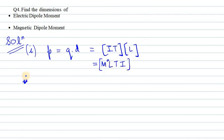Now the second one is magnetic dipole moment. Magnetic dipole moment can be defined as M equals I dot A, where I is current and A is area.